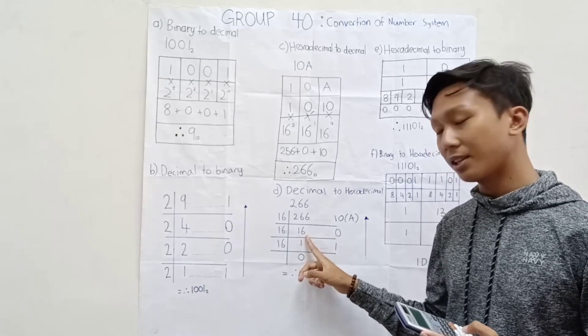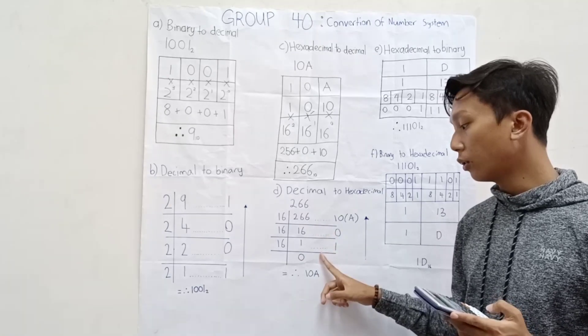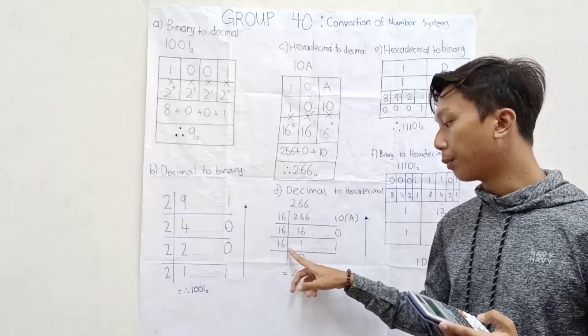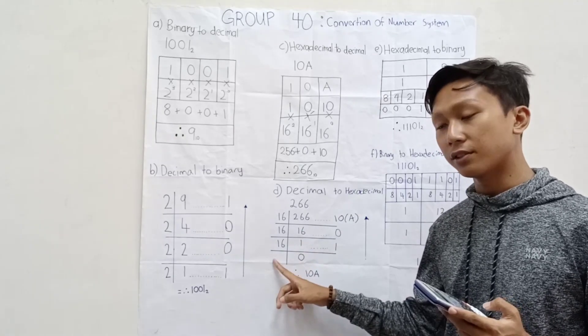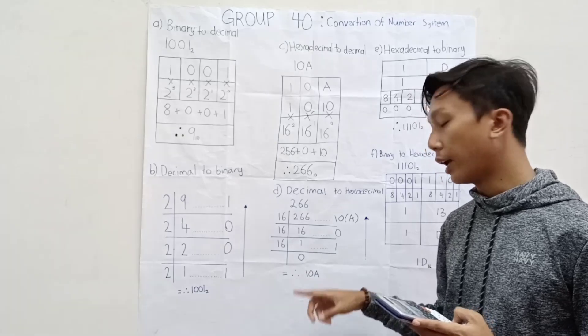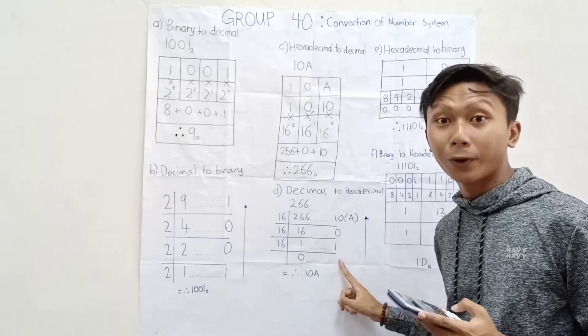Now, we will get 16. 16 divided by 16 is 1. There is no remainder. Therefore, it will be 0. Now, 1 divided by 16, we will get 0.0625. And 0.0625 times 16, we will get 1.